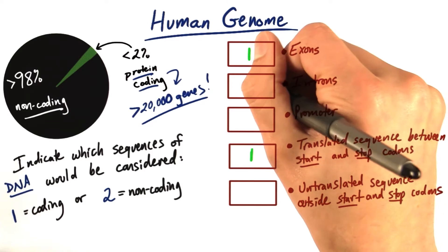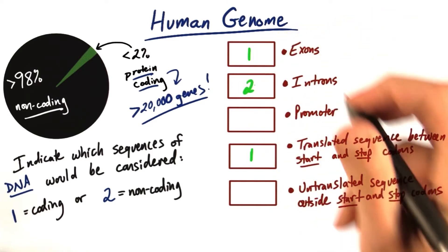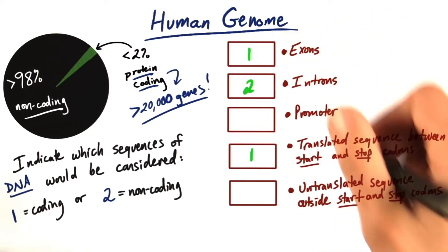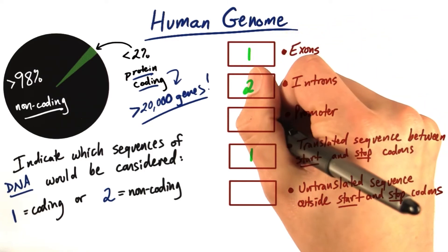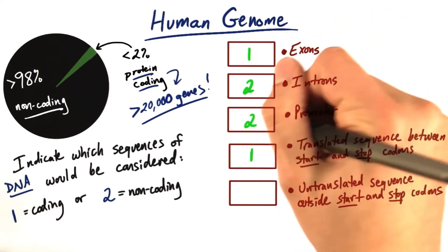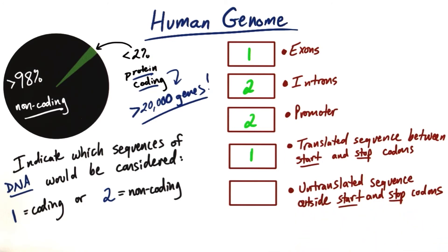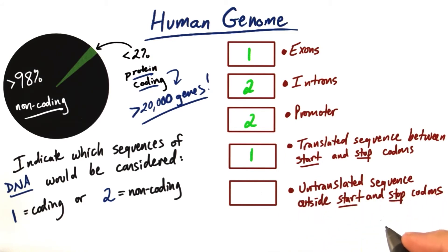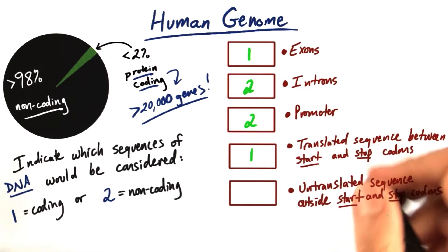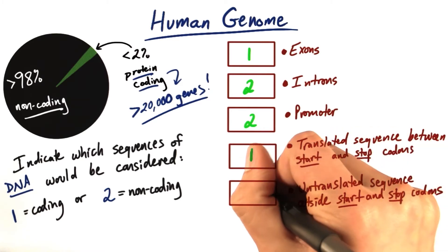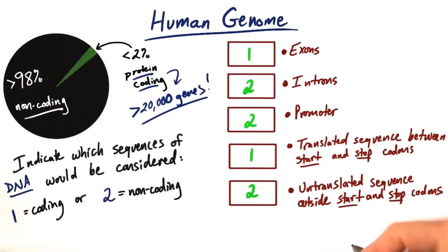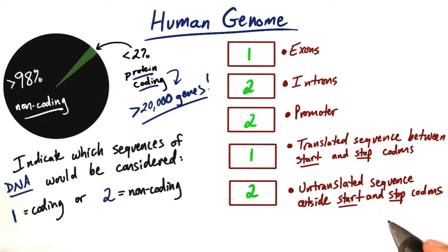Other regions like introns, which are spliced out of mRNAs, promoter regions which are responsible for initiating transcription, and untranslated sequences that are transcribed as part of the mRNA but outside of the start and stop codons are all considered part of non-coding DNA.